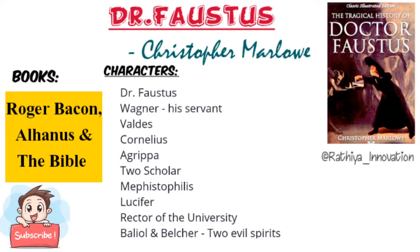After that, Wagner reveals the truth to the two scholars: that his master was dining with his friends Valdes and Cornelius, and that they should not even dare approach the dining hall at that moment. The two scholars now know that Doctor Faustus is in bad company — with the two wicked magicians. They think the two wicked magicians will certainly lead Faustus astray. They therefore decide to approach the rector of the university and request him to use his influence to bring Faustus back to the path of virtue.